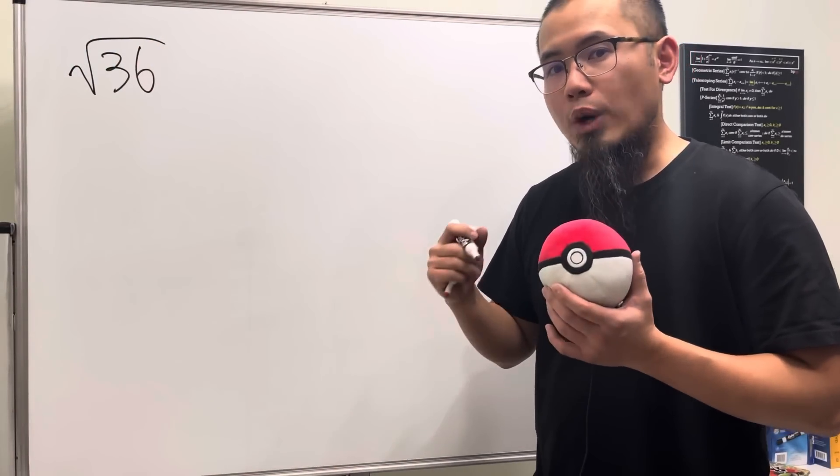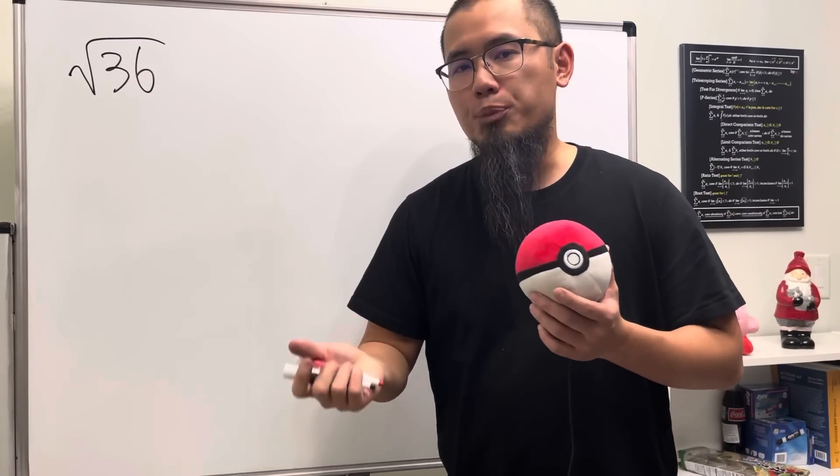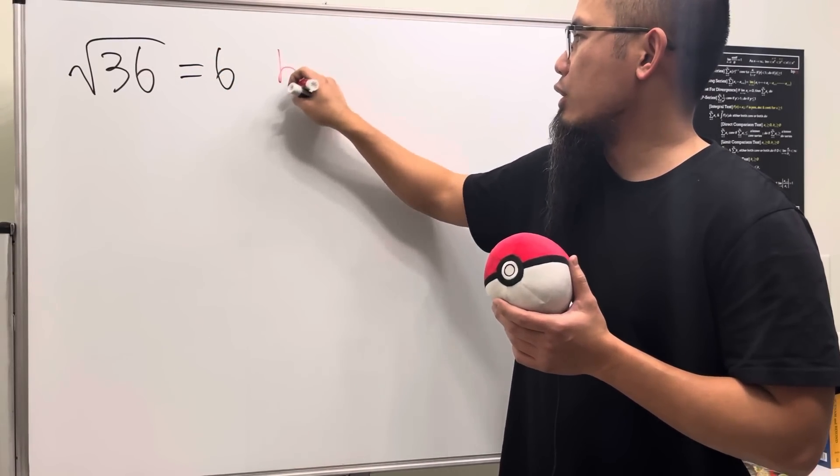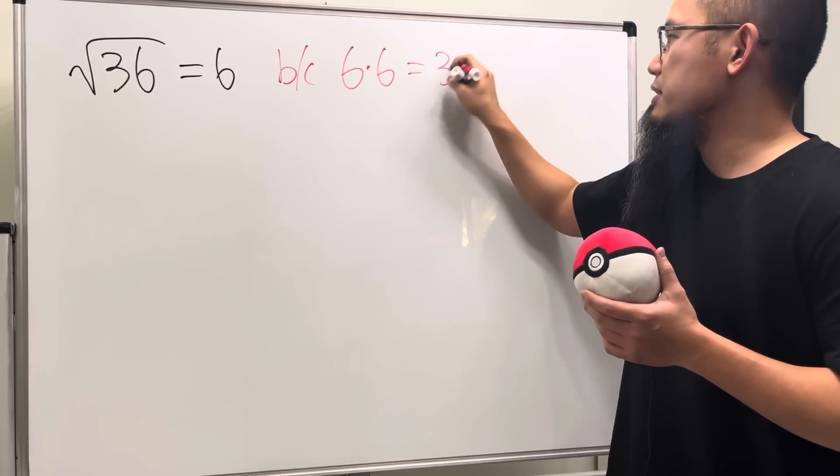To do this, we will have to ask ourselves, what times what will be 36? And they have to be the same number. And the answer for that will be 6. Let me write that down right here for you guys. 6 times 6 gives us 36.